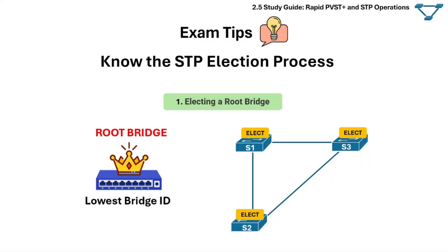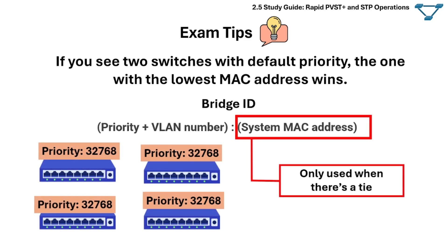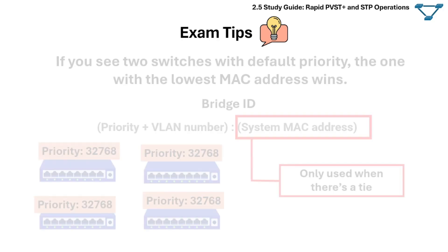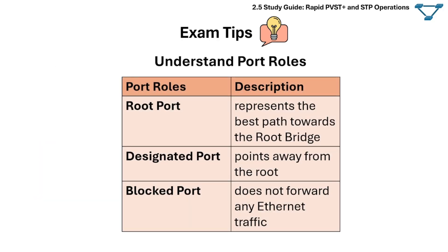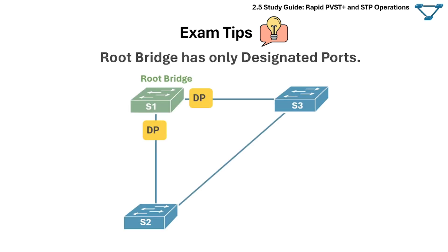For exam tips: the switch with the lowest bridge ID becomes the root bridge. If you see two switches with default priority, the one with the lowest MAC address wins. You need to understand the port roles. The root bridge has only designated ports.